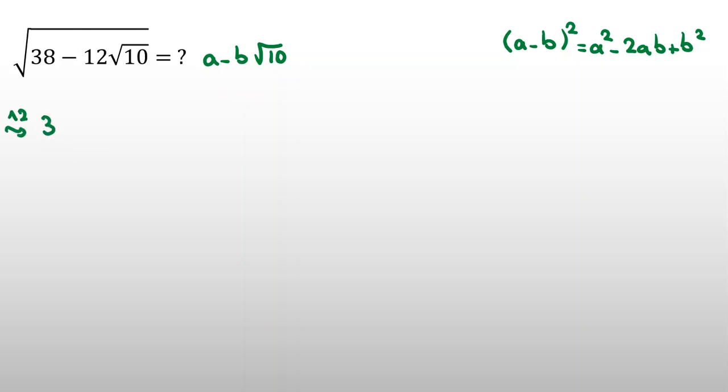38 minus 12 root 10 equal to right-hand side is a squared minus 2ab root 10 plus b squared, which will be 10b squared. Now, I know it will be a squared plus 10b squared. I'll rearrange this, then minus 2ab root 10.